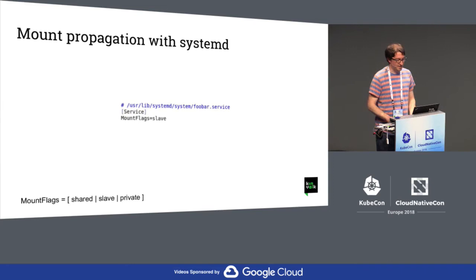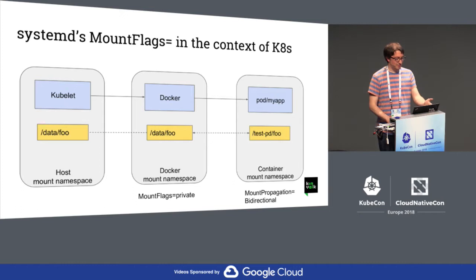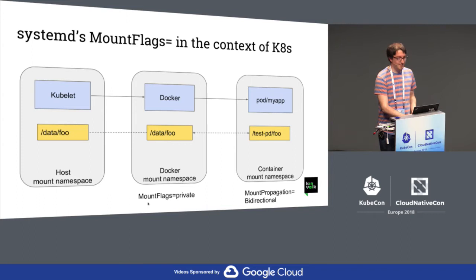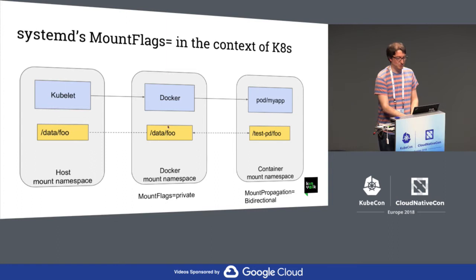Kubernetes is not the only software that uses this feature of the Linux kernel. For example, Systemd has a very similar thing — a Systemd unit where you define a service and you have this parameter, mount flag, where you define how you want the mount propagation to happen. Here I have the kubelet running on the host, and the kubelet will talk to Docker to create a container. If Docker was created as a Systemd service with the mount flag private, it means there will not be any mount propagation between the host and the Docker namespace. So even through Kubernetes, if you use mount propagation, that will not be propagated to the host. Typically the Docker service is not started like that, but it used to be the case in some distributions — that was a bug that is fixed now.